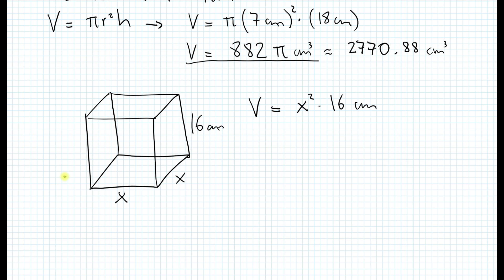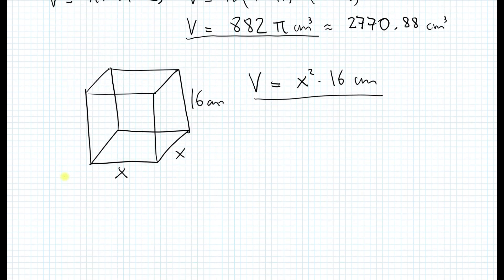Now that we have the volume of the cylinder and the volume of the prism, what we can do is set them equal to each other because they have to have the same volume according to the problem here. So what we can do here is write 882π cubic centimeters is equal to x² times 16 centimeters. So already you can see that the centimeters will cancel. This becomes centimeter squared and it makes sense because we have x² on the other side. Once you take the square root on both sides you end up with only centimeters which makes sense because the length of the side has to be in terms of centimeters.